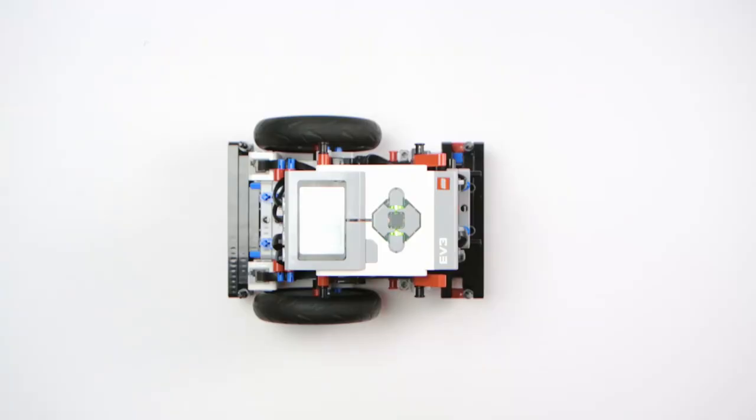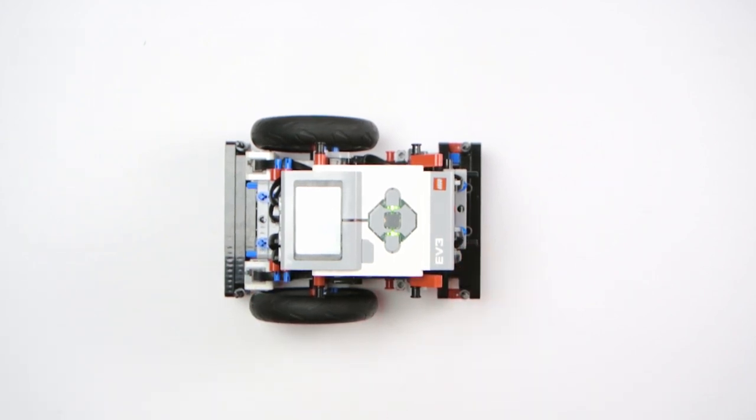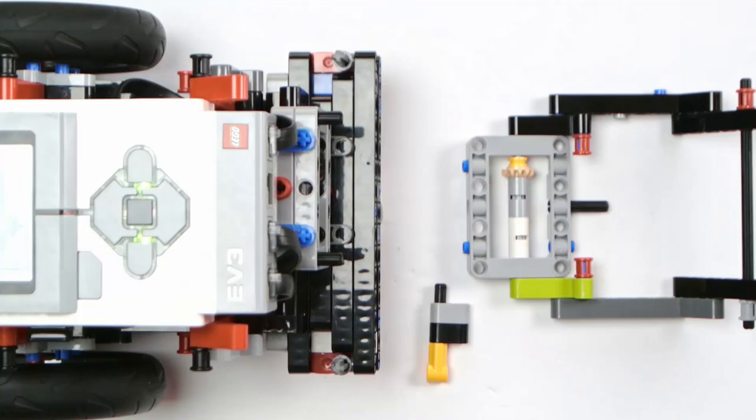We also have two active attachment ports, one in the front and one in the back. These are built the same way so that we can build our attachments easily. We tried many different ways of building our attachment ports until we came up with this design. It allows us to put on and remove attachments easily and is very secure.